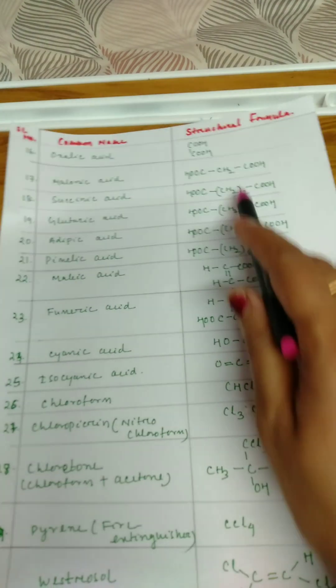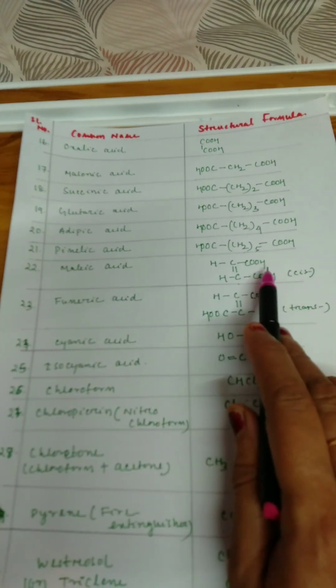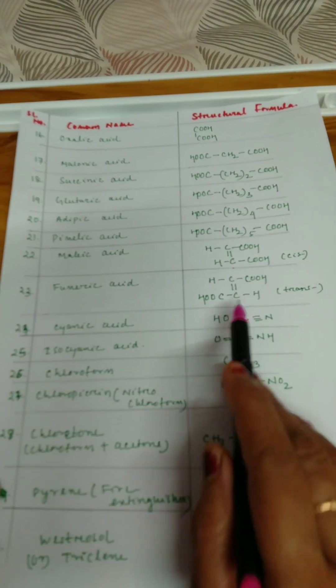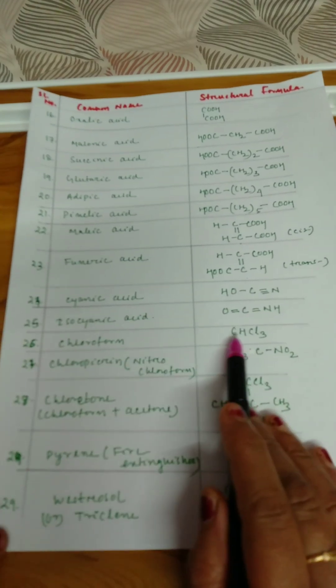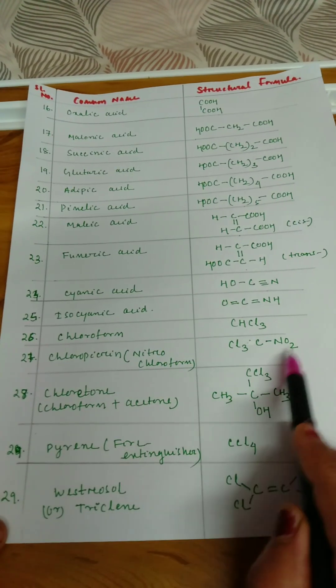There is a reason to remember maleic acid. Cis form is known as your maleic acid, trans form is known as your fumaric acid. Cyanic acid is your chloroform, chloropicrin.